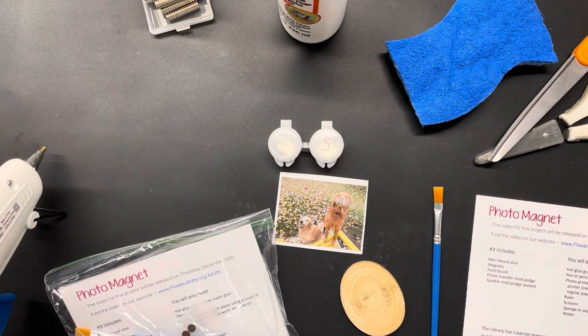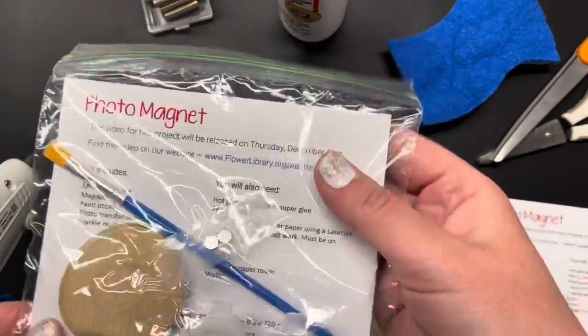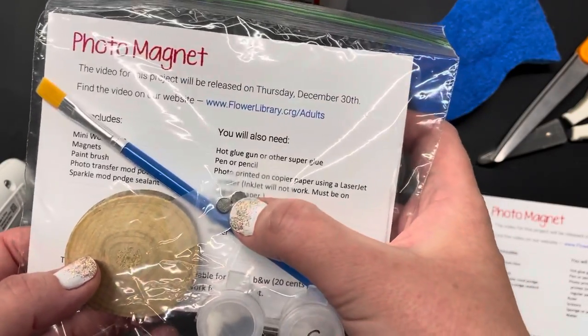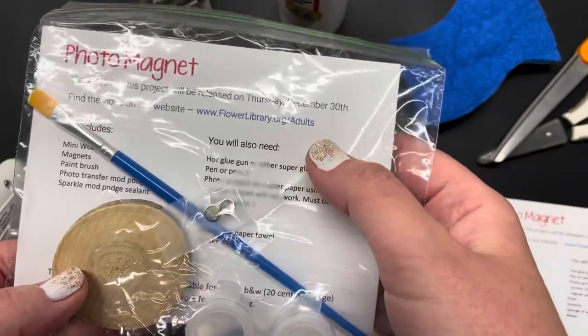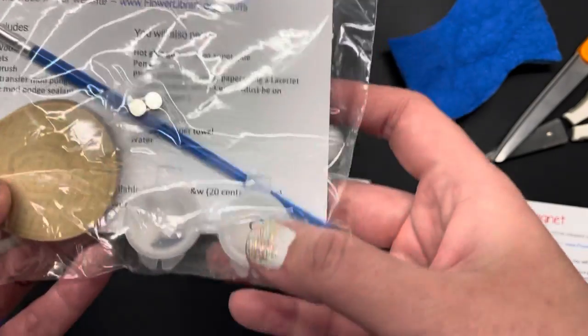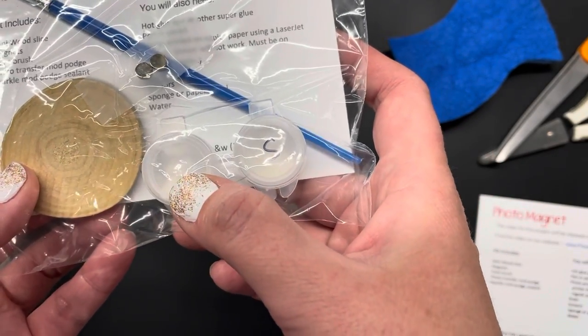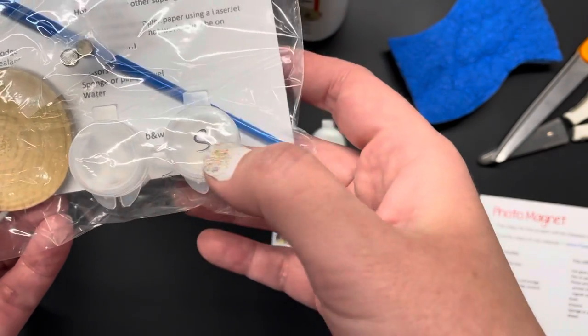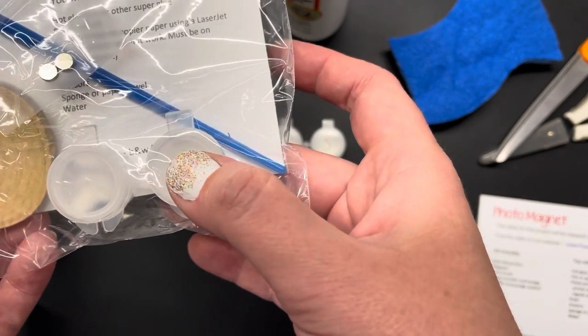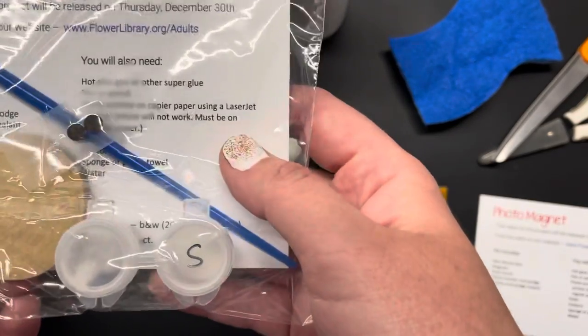Welcome to another crafting with Roswell. Today we'll be making a photo magnet. In your kit you will find a mini wood slice, two small magnets taped to the inside of your sandwich bag, a paintbrush, and two paint pots. One that is unmarked will have your photo transfer mod podge, and the one marked with an S contains a sparkle mod podge to use as a sealant on your finished project.